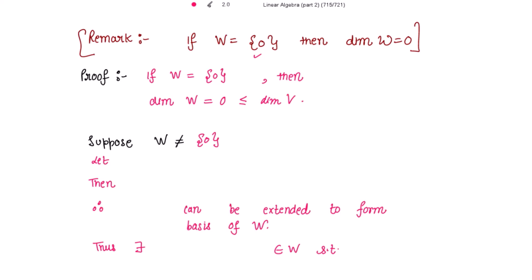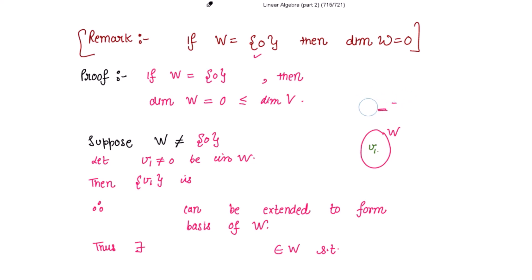Suppose W is not equal to the singleton set containing the zero element. Let v1 be a non-zero vector in W. The singleton set {v1} is linearly independent, because if you take a linear combination of v1 with scalar alpha equal to zero, the scalar must be zero. Since v1 is non-zero, any single non-zero vector forms a linearly independent subset of W.